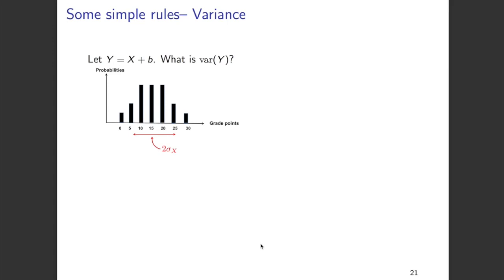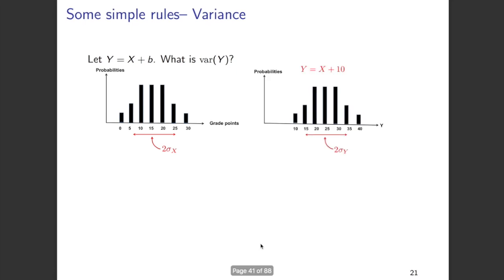Now let's look at the variance of a random variable and its properties. Assume y is a simple linear function of x: y equals x plus b. What we're doing is shifting each value of x by the constant b. In this figure, we see the probability mass function of x with a spread of two sigma, where sigma is the standard deviation of x. When y equals x plus 10, all values of y are shifted by 10 and the PMF looks the same as x but centered at a different value — the PMF of x is centered around 15 and the PMF of y is centered around 25.